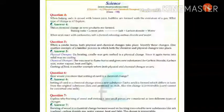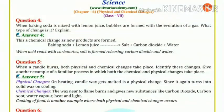Question 4: When baking soda is mixed with lemon juice, bubbles are formed with the evolution of gas. What type of change is it? This is a chemical change as new products are formed.